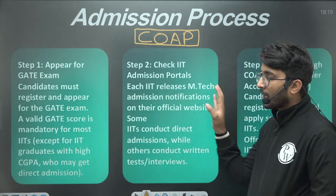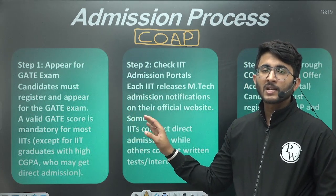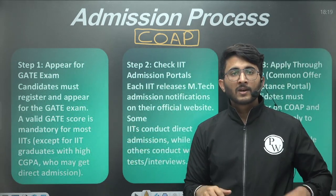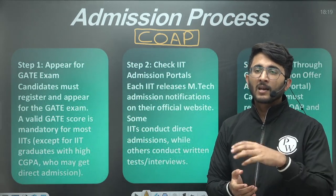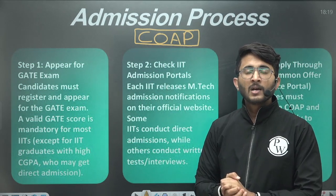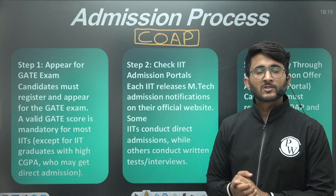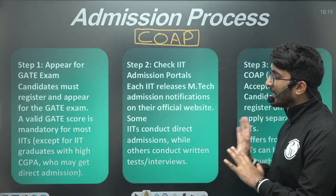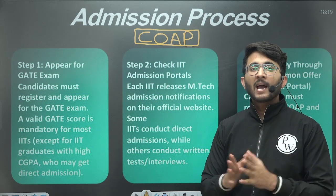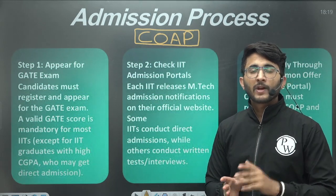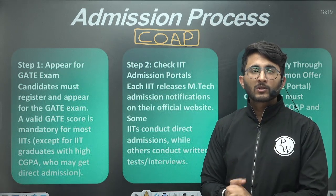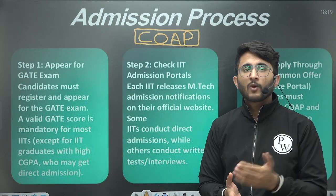Once you visit an individual IIT website and complete your registration, they require a COAP registration number. The COAP 2025 portal is released around the time of the GATE result. We will provide a complete detailed video when it releases, covering how offers are released in COAP. When applying to IITs, you submit your COAP registration number, and offers appear in the COAP portal across rounds — COAP round 1, round 2, round 3 — and you need to wait patiently as offers release one by one.